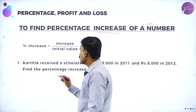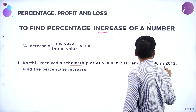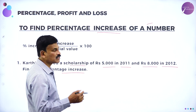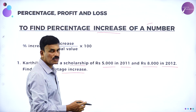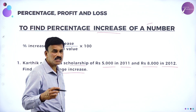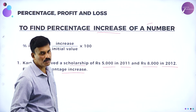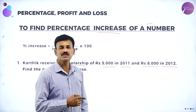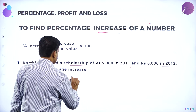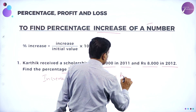Now let us take an example. Karthik received a scholarship of rupees 5,000 in 2011 and rupees 8,000 in 2012. That is 3,000 rupees has been changed — what is that 3,000 in terms of percentage increase? First, find out the increase amount: increase is equal to rupees 8,000 minus rupees 5,000, that is equal to rupees 3,000.